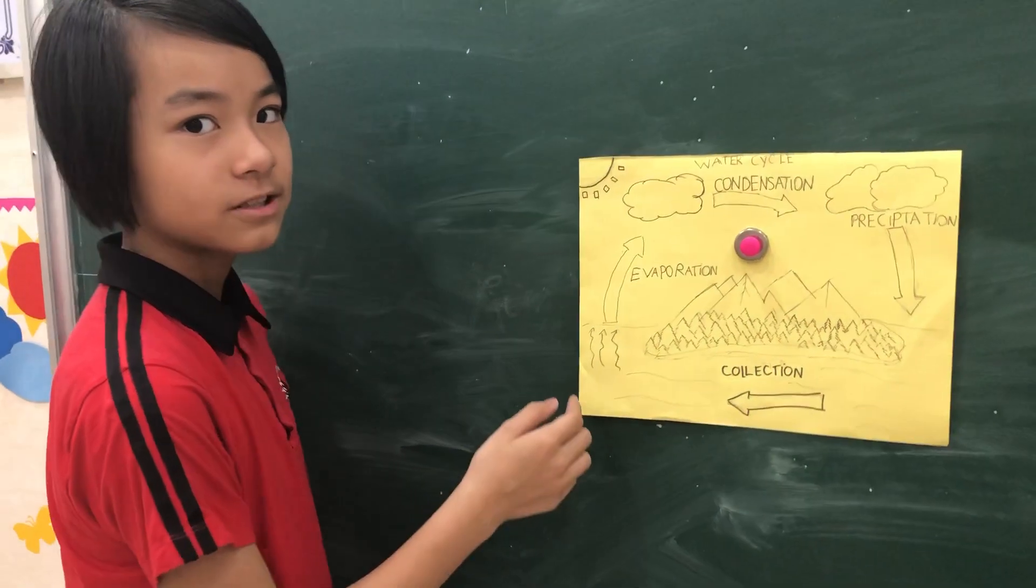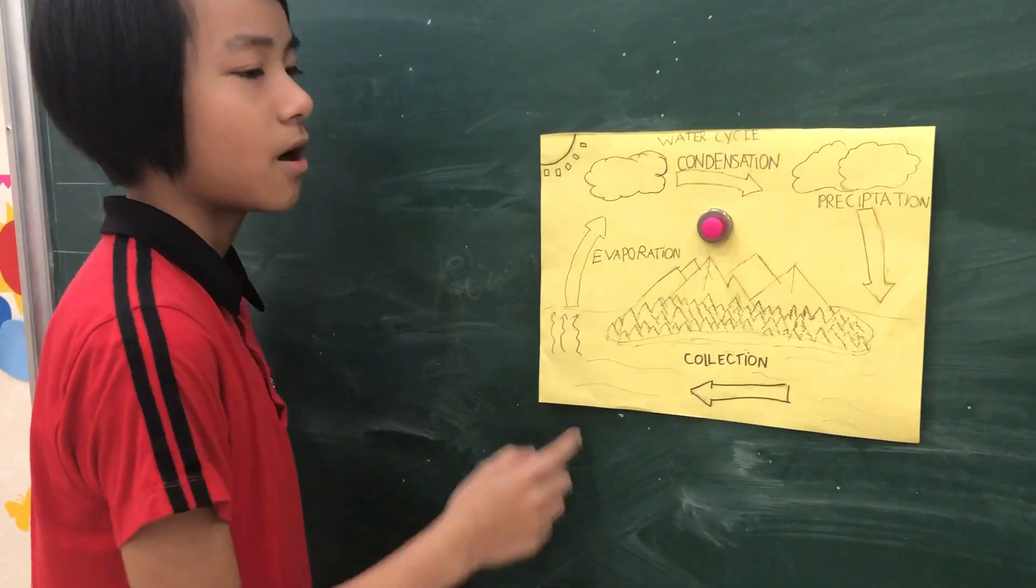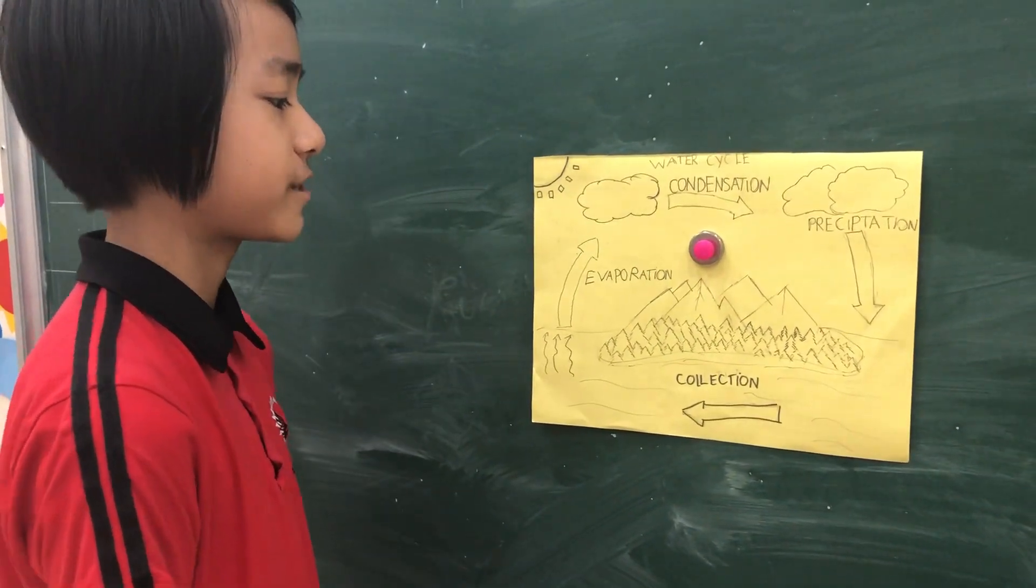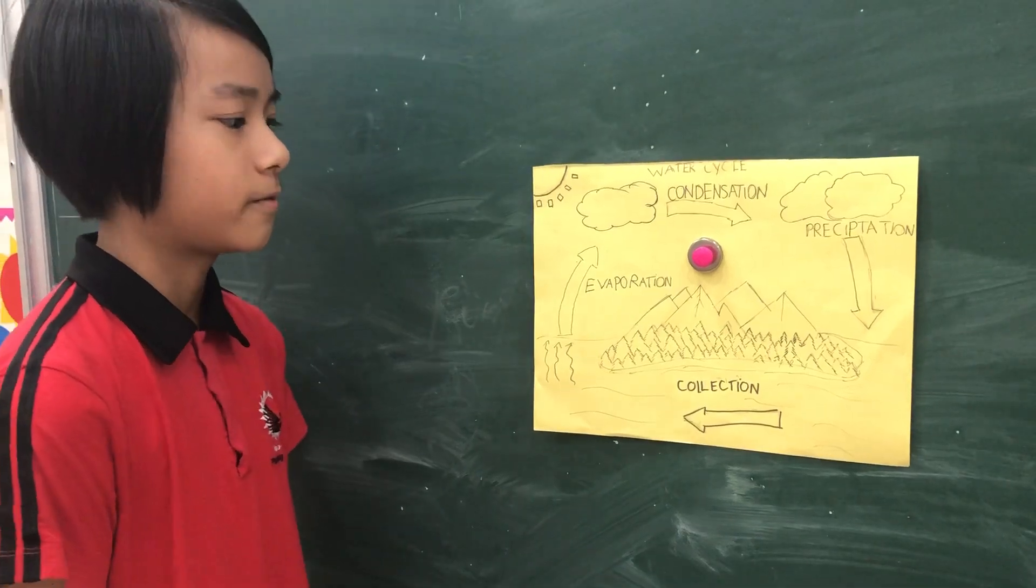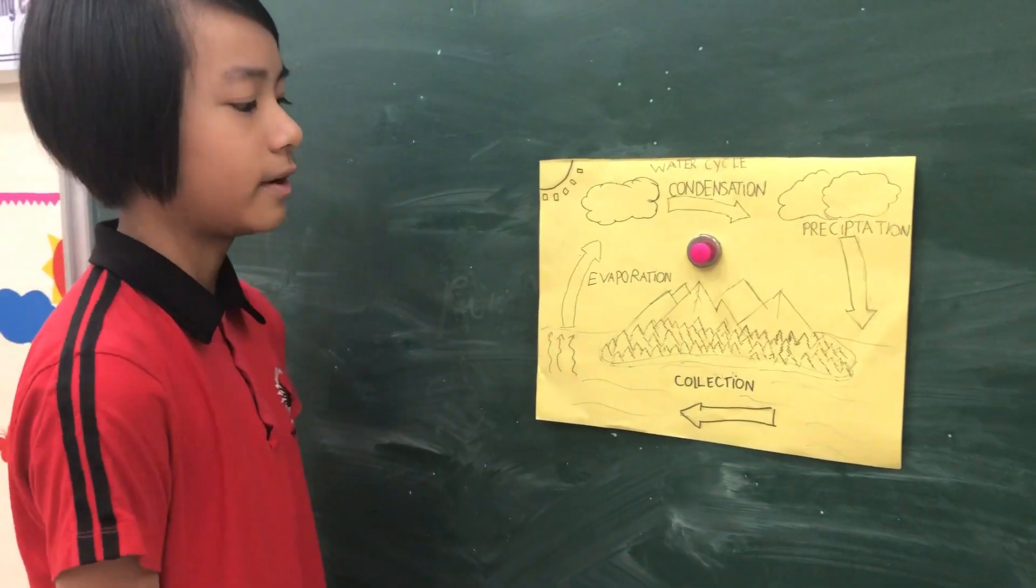How does water from the lake or sea change into water vapor? This process is called evaporation.